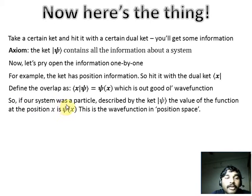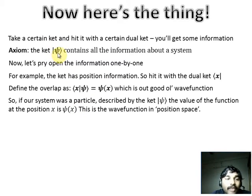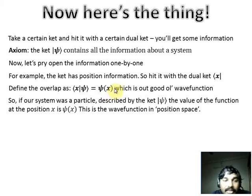If our system describes one particle, described by ket psi, then the value of that ket at position x — in the position space — is psi of x. So the wave function lives in the position space, while the ket psi lives in the Hilbert space. You overlap the ket with bra x to find the component of psi in the position space. If you mod-square psi of x, it gives the probability density.